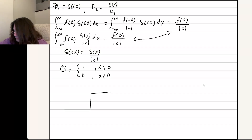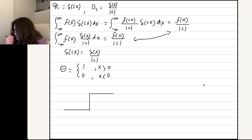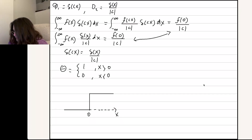That needs to be a completely vertical line — that's the trick. So here's the Heaviside function as a function of x. I'll draw the x-axis here, with 0 marked, and you can see it has the value of 0 to the left and 1 to the right.